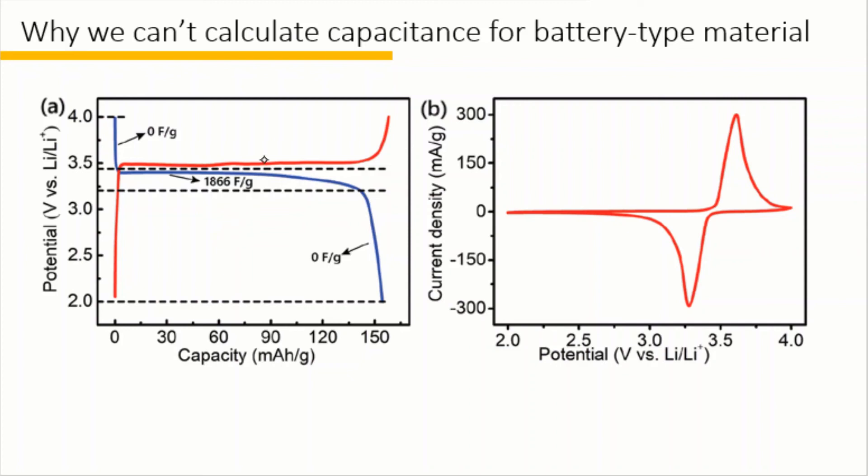If we report 1866 farads per gram for this material, then the capacitance is almost an order of magnitude higher than that of all carbon-based capacitive electrodes. However, this capacitance is actually only available in a 0.2 volts range.